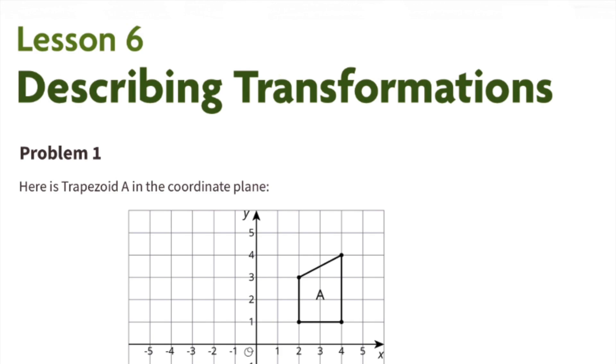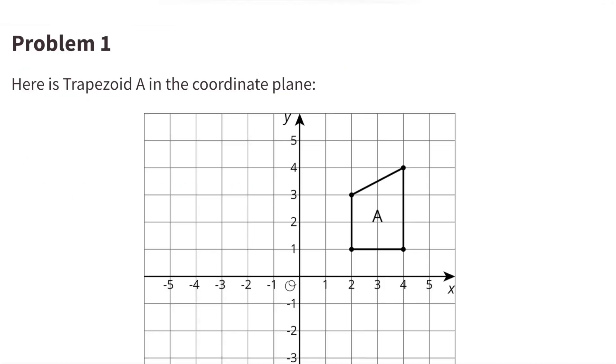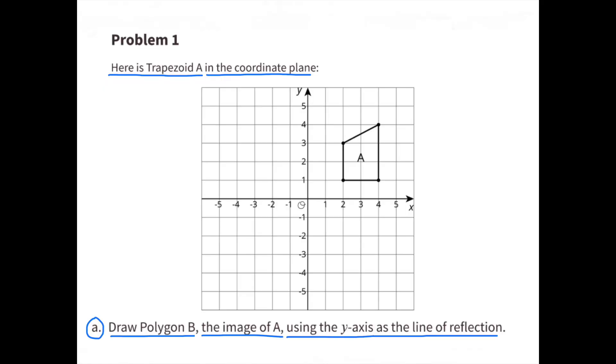Eighth grade, Unit 1, Lesson 6, Describing Transformations. Number 1. Here is trapezoid A in the coordinate plane. Draw polygon B, the image of A, using the y-axis as the line of reflection.